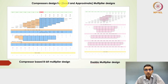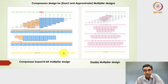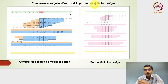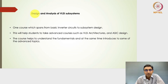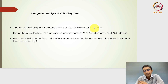We will also look at exact multipliers, which give exact results, and approximate multiplier designs, which give inexact results. In today's neural network, machine learning, image processing, or signal processing applications, a little bit of inaccuracy is acceptable. We will examine approximate multiplier designs and their benefits. This course spans from basic inverter circuits all the way to novel approximate multiplier subsystem designs.